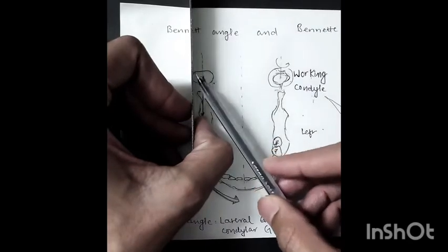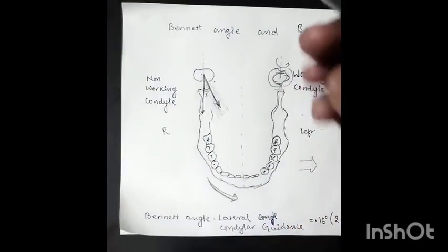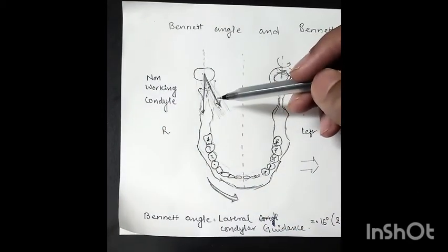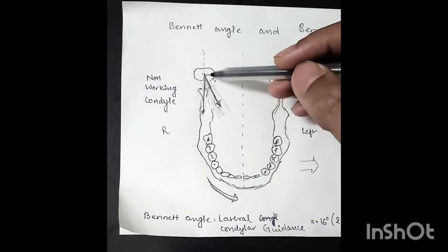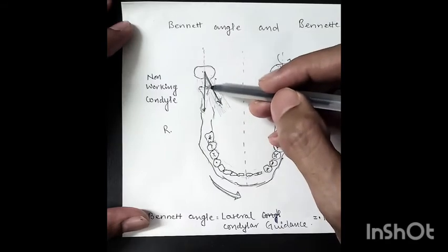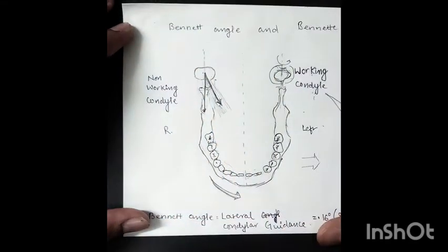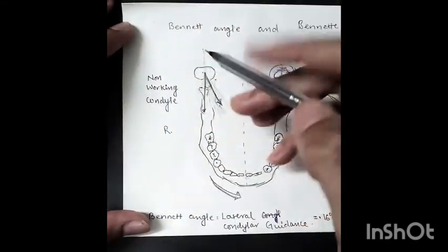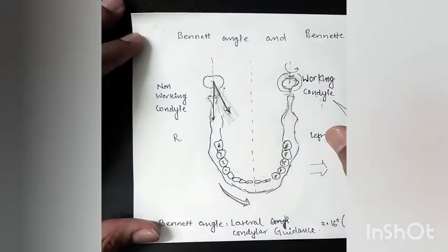This pathway of the non-working condyle makes this angle with the sagittal plane in the horizontal plane. This angle is called the Bennett angle. So now let's talk about Bennett movement.